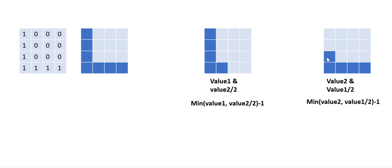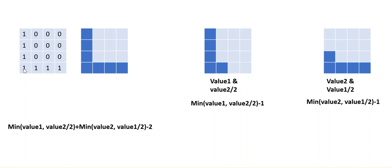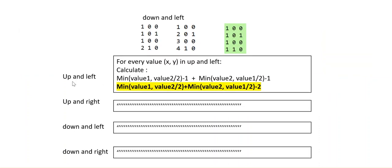If this segment is larger, the formula is: minimum(value1, value2 // 2), and for the other direction: minimum(value2, value1 // 2), then subtract one to avoid the invalid two-by-one case. When you combine these two terms, you get the total number of L shapes at that particular point only. This formula is then applied to the entire matrix — for all four combinations: up-left, up-right, down-left, and down-right.